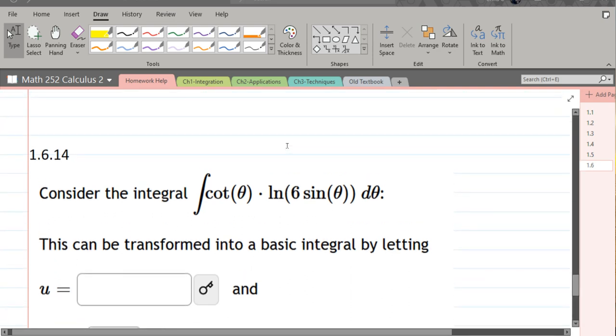So what are some reasonable u substitutions to make? You never just want to go for the variable, so if I try u equals theta, du equals d theta...